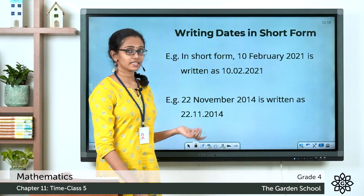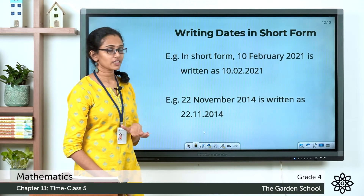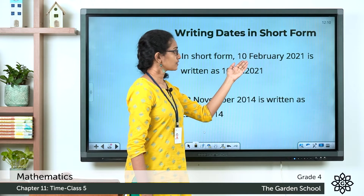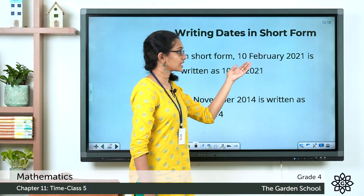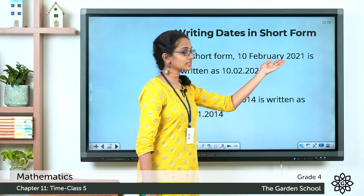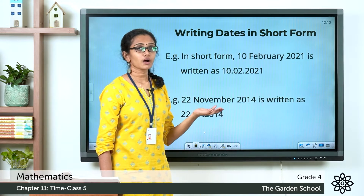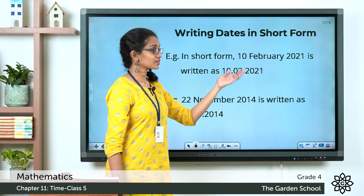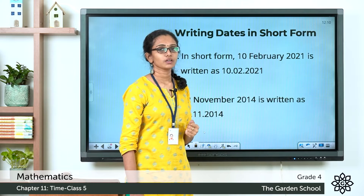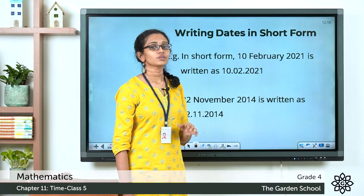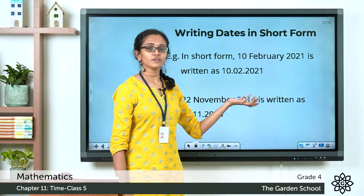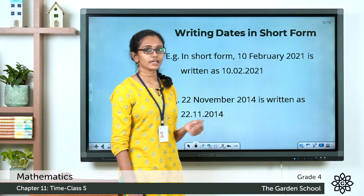There are different ways to write a date. For example, you could write it as 10 February — the day, the name of the month, and then the year. It may not always be convenient to write the date like this, so in those cases we can use a short form to represent the date.